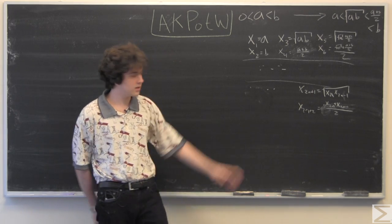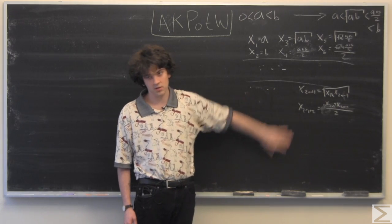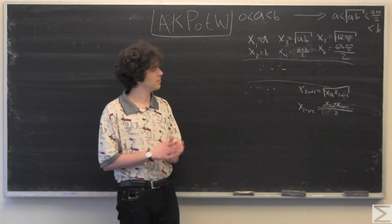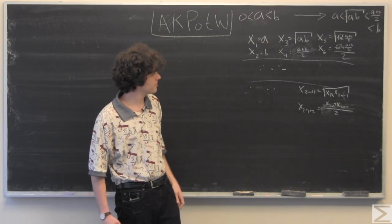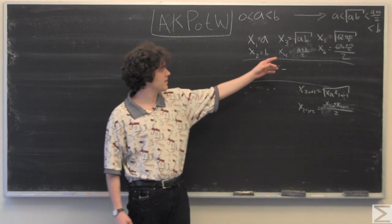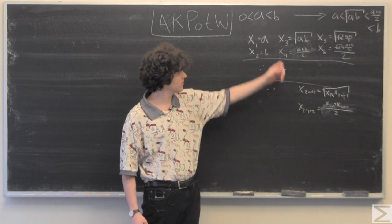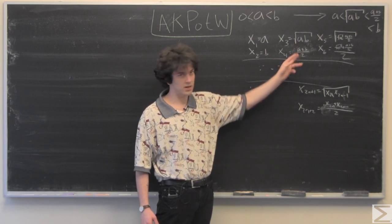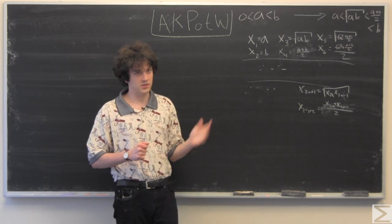So what I've done here is to make this general statement a little bit clearer in your mind. We have two terms, x1 and x2, followed by x3 and x4, and you notice that x3 and x4 are the geometric and arithmetic mean of x1 and x2.